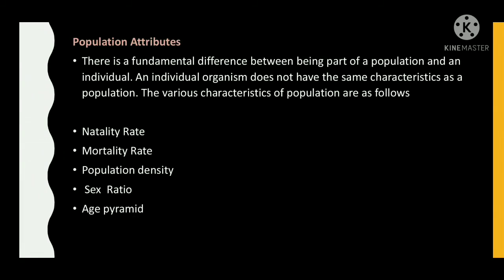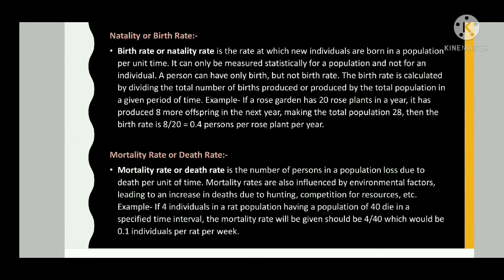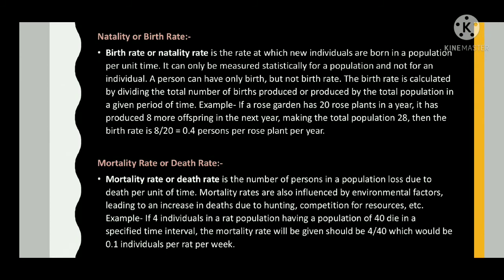There is a fundamental difference between being part of a population and an individual. An individual organism doesn't have the same characteristics as a population. The various characteristics of a population include: natality rate, mortality rate, population density, sex ratio, and age pyramid. Birth rate or natality rate is the rate at which new individuals are born in a population per unit time. It can only be measured statistically for a population and not for an individual.